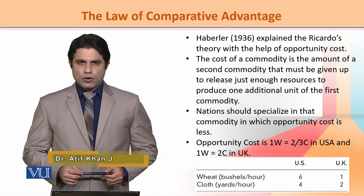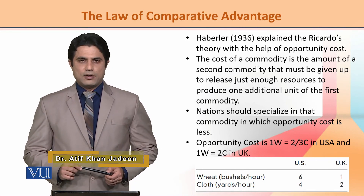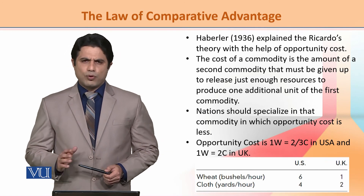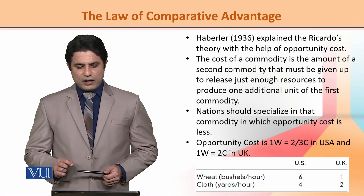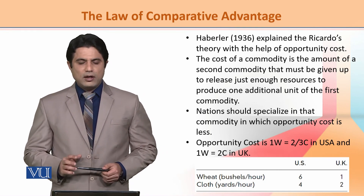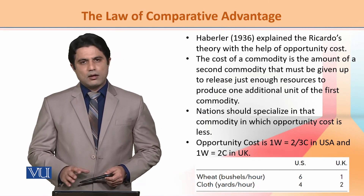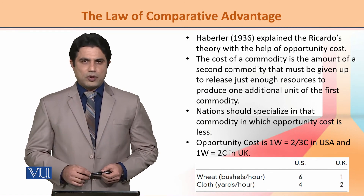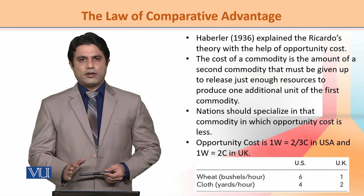The cost of a commodity is the amount of a second commodity that must be given up or foregone to release just enough resources to produce one additional unit of the first commodity. This concept is better than the traditional approach.